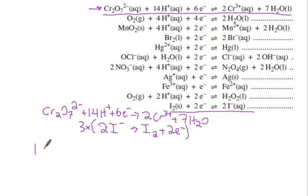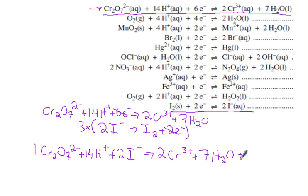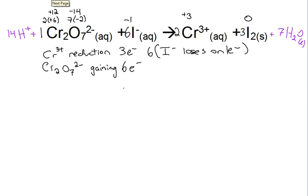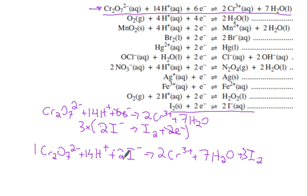So what do I get in total? I'm going to get 1 of the dichromates, I'm going to have 14 hydrogens, 6 electrons cancels with 3 times 2, 6 electrons, so those cancel. And I also have the 2 iodines over here, and on the other side, 2 chromium ions, 7 waters, and our 3 iodines because we have to multiply that by 3. That's the same equation as we had a second ago: 14, 1, 6, 2, 3, 7.